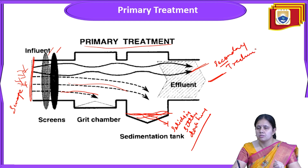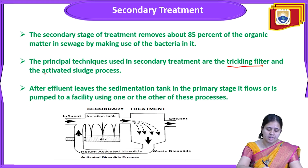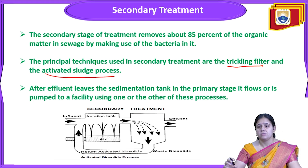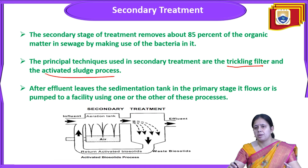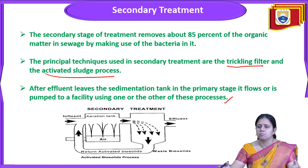Secondary treatment removes 85% of the organic matter in sewage by making use of bacteria. The principal techniques used in secondary treatment are the trickling filter and the activated sludge process. After the effluent leaves the sedimentation tank in the primary stage, it flows or is pumped to a facility using one or the other of these processes.